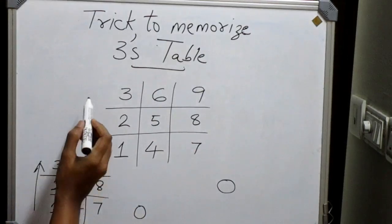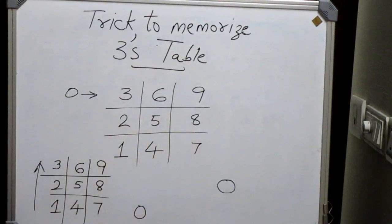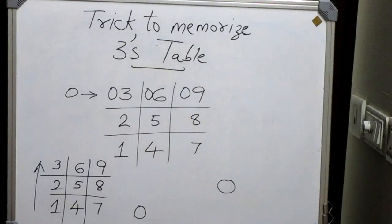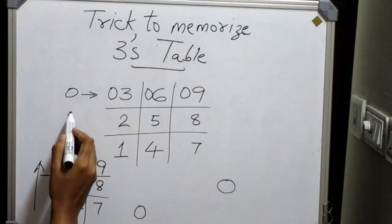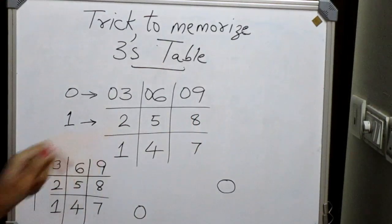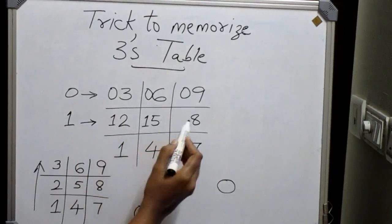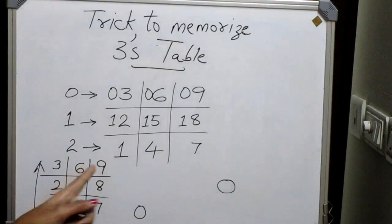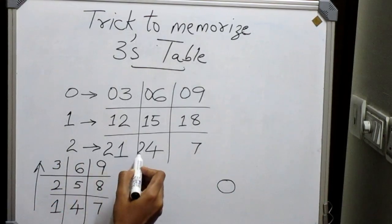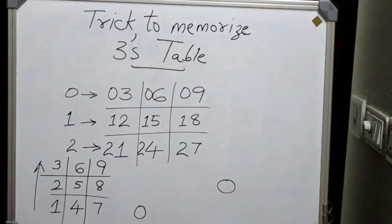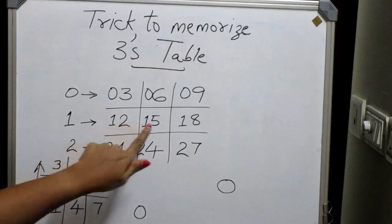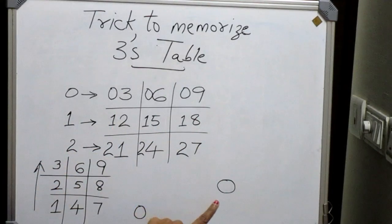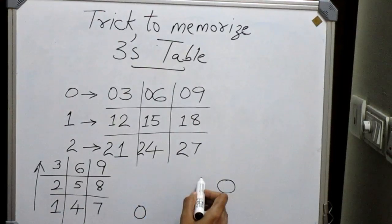The next step: add 0 before the numbers in the first row — put 0 to the existing numbers in the first row. Then put 1 before the existing numbers in the second row: 1 here, 1 here, and 1 here. And put 2 before the existing numbers of the third row: 2 here, 2 here, and 2 here. We have 1 and 0 left, and to that 0 we are going to add 3.